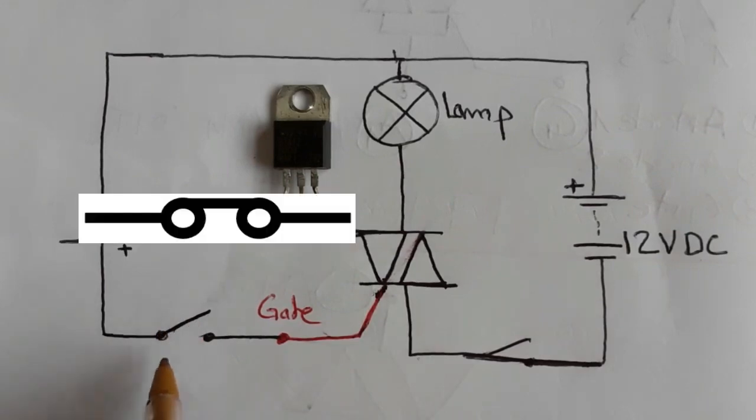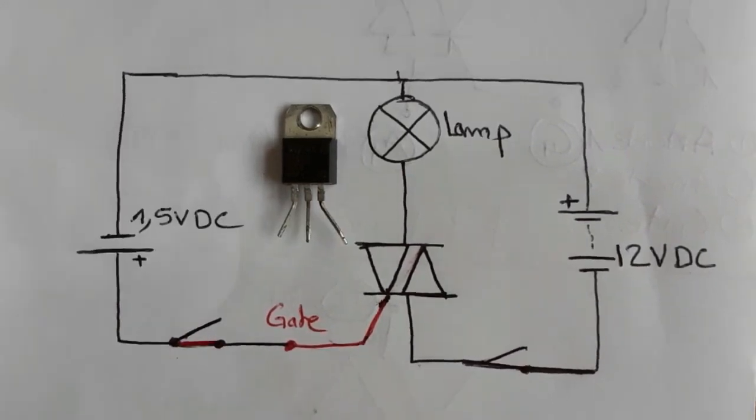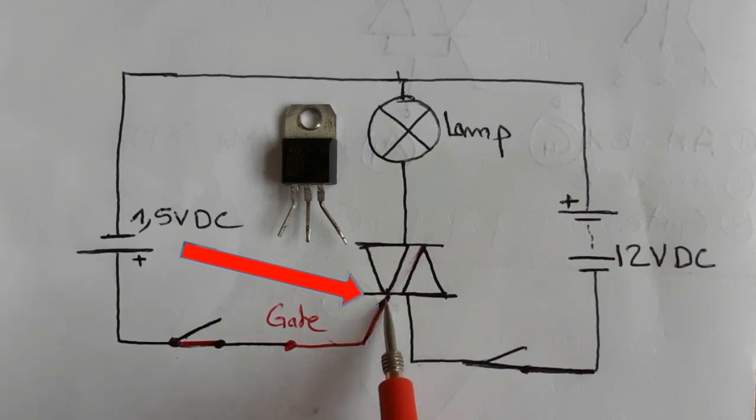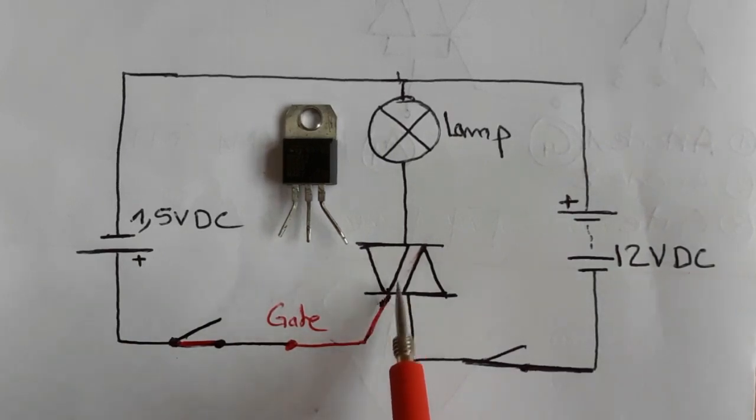But, if we close the switch, as you can see, now, the control voltage, 1.5 volt DC will pass through the switch and then to the gate. And then, now, the TRIAC will be activated.